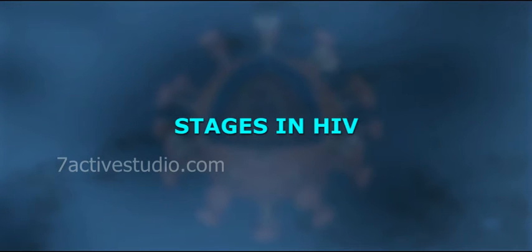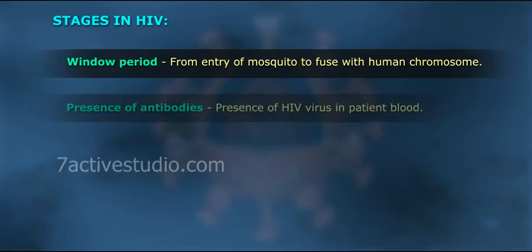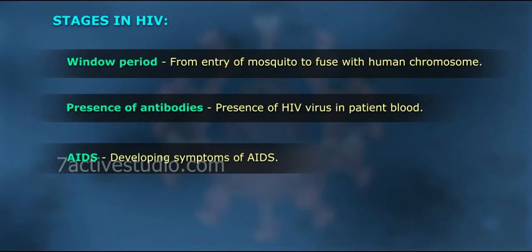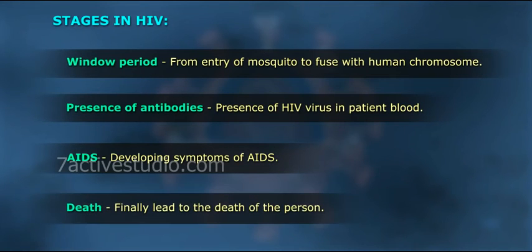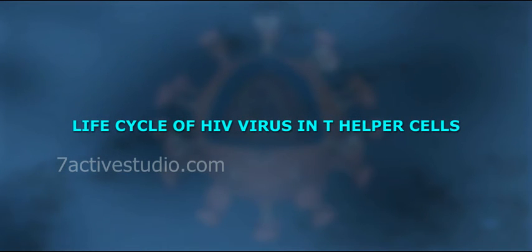Stages in HIV: the window period from entry of the virus to fusion with the human chromosome, presence of antibodies, presence of HIV virus in patient blood, AIDS, developing syndromes of AIDS, and finally leading to the death of the person.